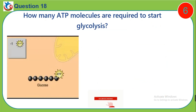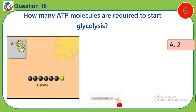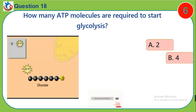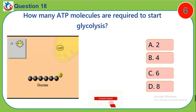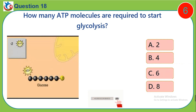Question 18. How many ATP molecules are required to start glycolysis? A, 2. B, 4. C, 6. D, 8.